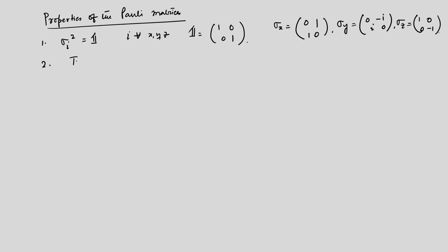Property 2: the trace of σ_i equals zero — the sum of diagonal elements is zero for all three matrices. Property 3: the determinant of σ_i equals −1. For σ_z, for example, det = 0·0 − (1)(−1) = −1. The eigenvalues of each are +1 and −1, and all three are Hermitian matrices despite σ_y having imaginary entries.